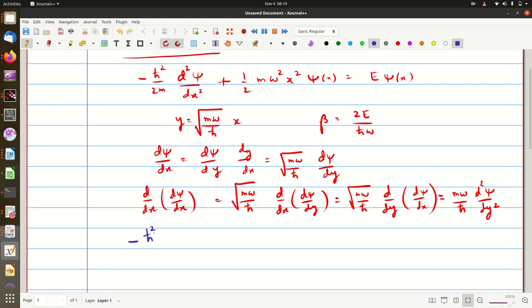We have minus h cross square upon 2m and d square psi by dx square we will substitute as m omega by h cross into d square psi by dy square, plus half m omega square x square, which will be h cross by m omega times y square into psi of y equal to E. E can be written as beta times h cross omega by 2 into psi of y.